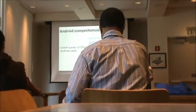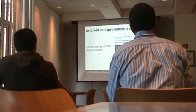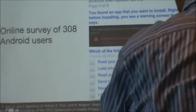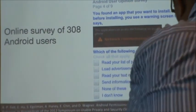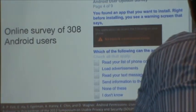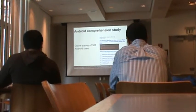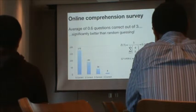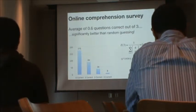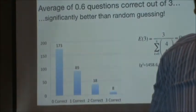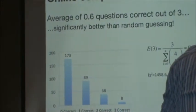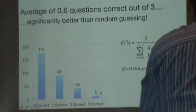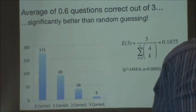For each question we had four different responses. For instance, one permission was granting full internet access; the options were: read your phone contacts, load advertisements, read text messages, or send information to an application server — plus 'none of these' and 'I don't know.' The correct answer was that it could be used to load advertisements as well as send information to an application server. Every participant saw three of these permission requests. What we found was that on average participants got 0.6 questions correct out of three. While this is significantly greater than what we'd expect from random guessing — indicating people actually tried to answer correctly — it's still pretty poor comprehension. Only 8 people out of 300 correctly answered all three questions, and over 50% couldn't get any of them correct.